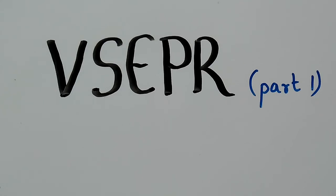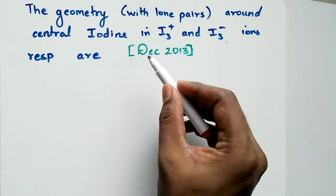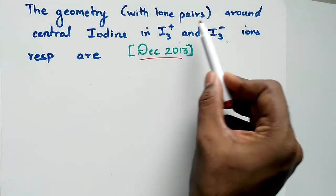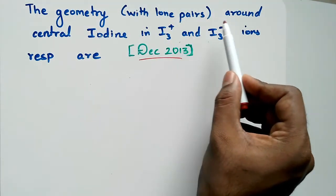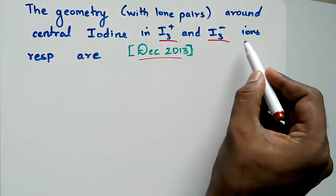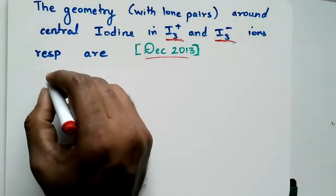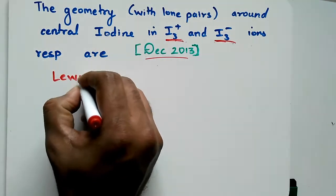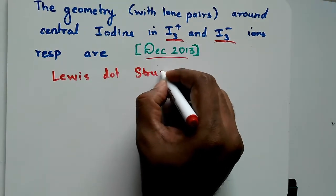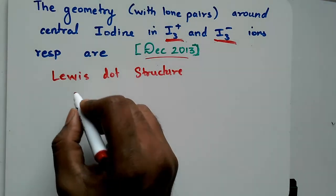Hello all, welcome to VSEPR theory part one. This is a question from December 2013 about geometry with lone pairs. We have to consider lone pairs also around the central iodine in I3+ and I3- ions respectively. Let us draw the Lewis dot structure for these ions.